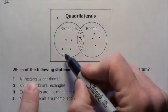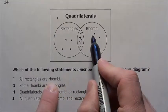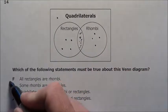All rectangles, everybody in this circle, is a rhombi. That's not true. These guys right here, they are rectangles but they are not a part of the rhombi. So F is out.